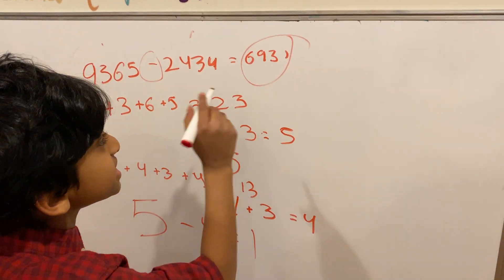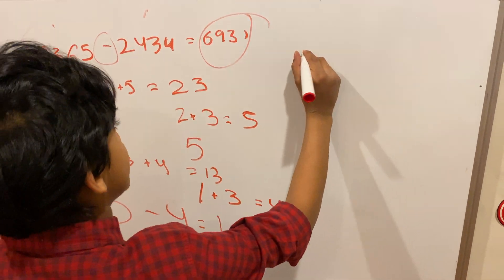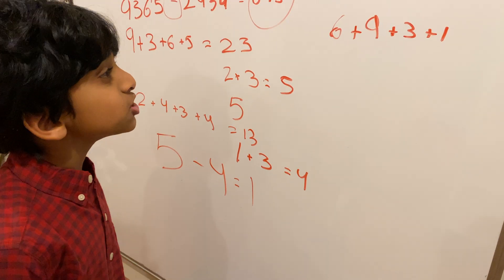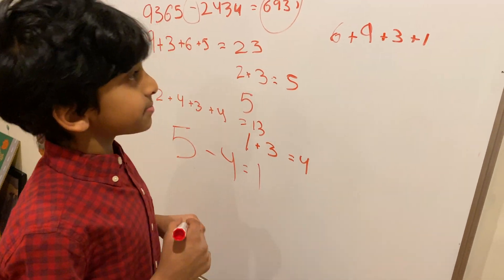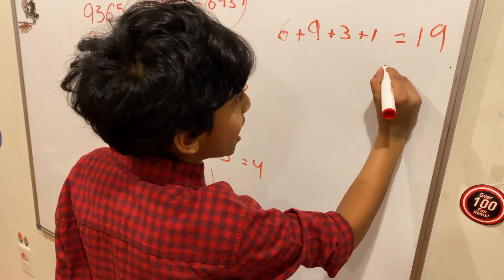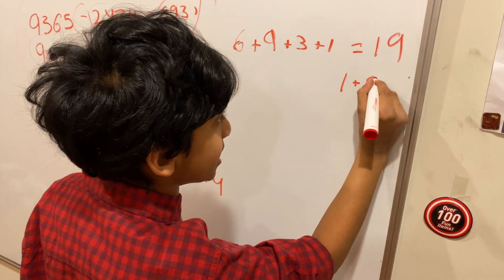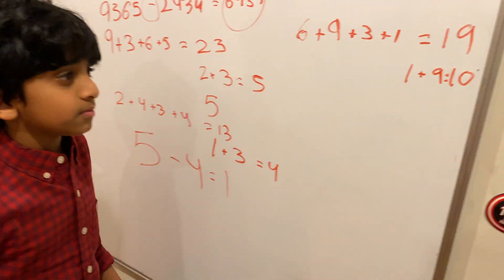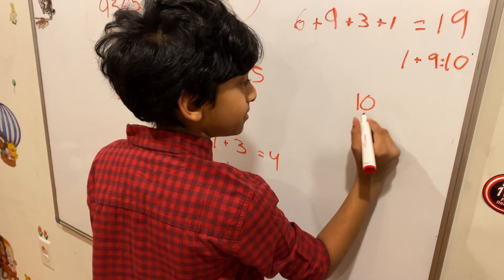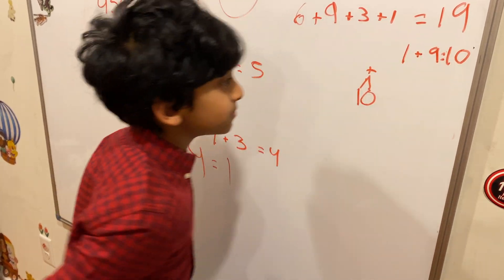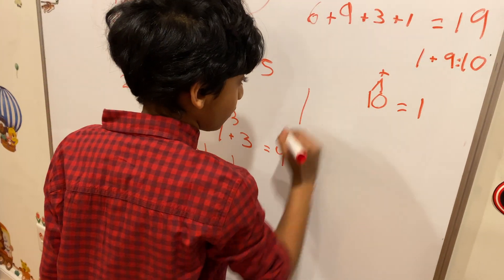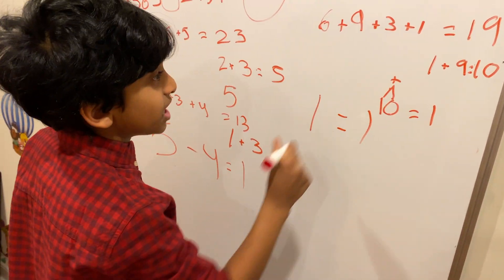Now let's come to the right hand side: 6931, which is our answer. We do 6 plus 9 plus 3 plus 1, which is 19. Now let's make 19 into a single digit number: 1 plus 9 is 10. Make 10 into a single digit: 1 plus 0 which is equal to 1. Now let's compare — the left hand side is 1 and the right hand side is 1. So 1 equals 1, and if they're equal, they're correct.